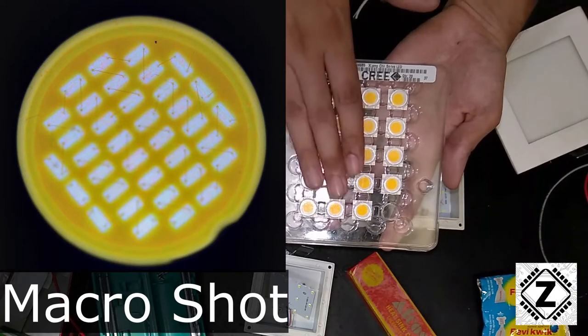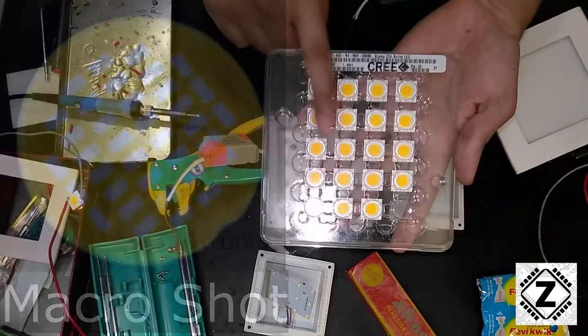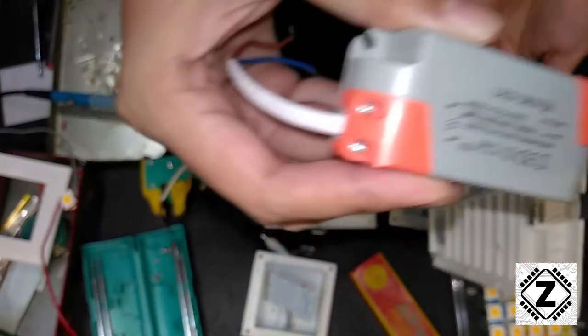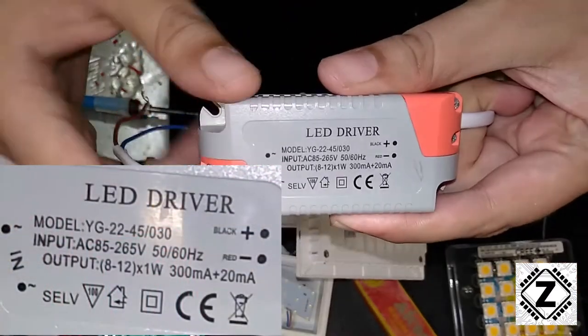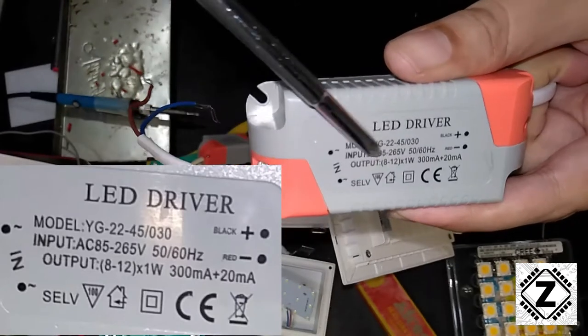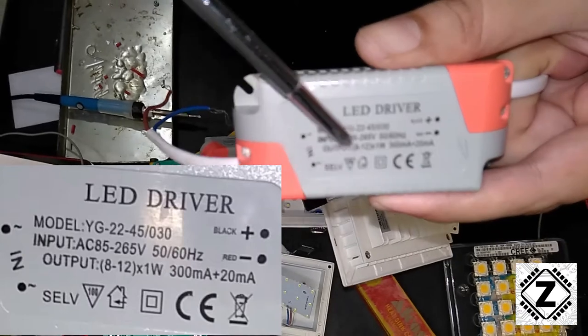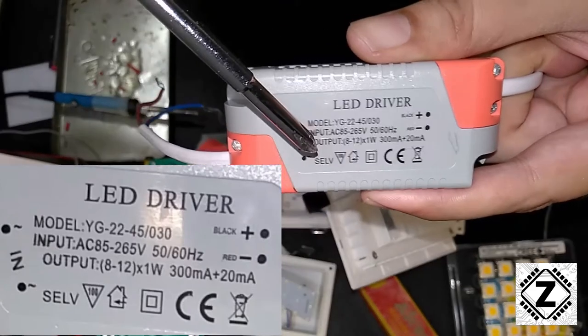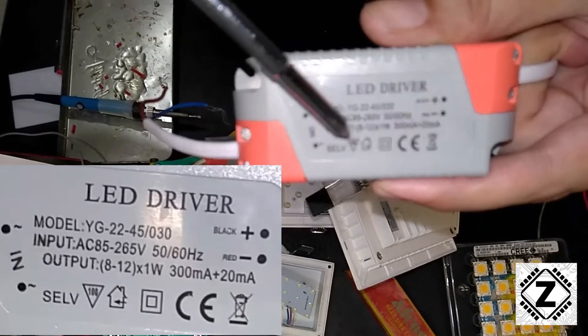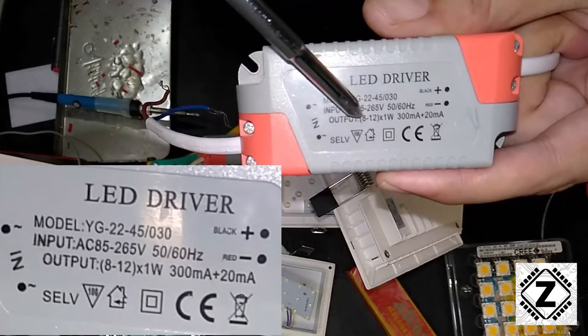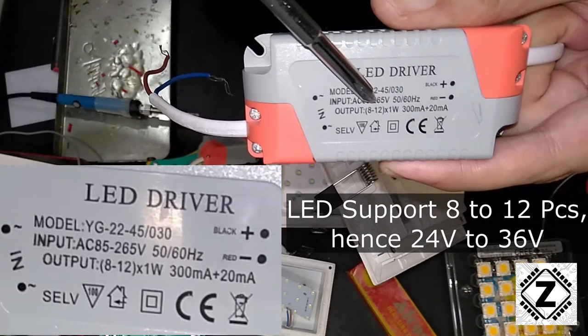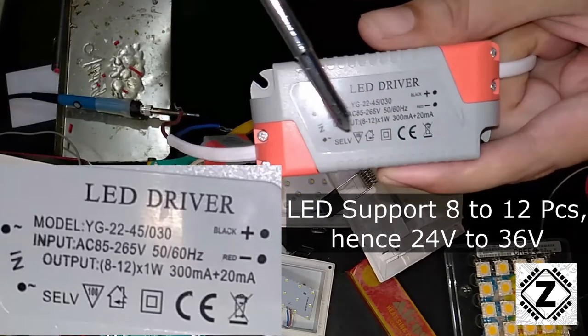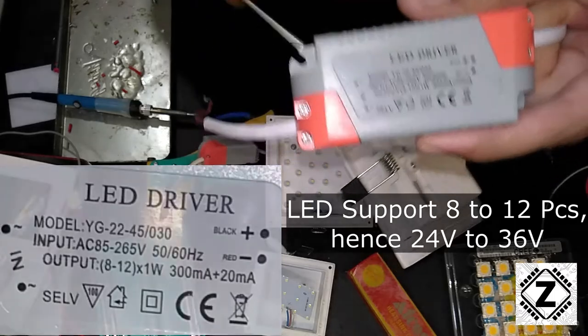Let me quickly explain how to buy these standard kind of COB arrays. To buy these COB arrays, the first thing you need to look for is your LED driver. Here is how your LED driver looks. This particular driver says it can take somewhere from 8 to 12 LEDs. On average, each LED chip is worth 3 volts, so we can multiply these figures. 8 into 3 is 24 volts, 12 into 3 is 36 volts. So basically what this driver is saying is that we can buy any COB LED array which is between 24 to 36 volts.